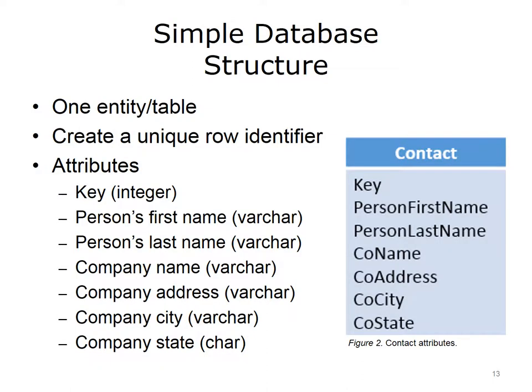Consider a database containing contacts' data. For each contact, the name and company information are recorded. A simple database structure can be created using a single entity that looks like the contact file. The data about a contact comprise the attributes of the contact entity. A key — an identification number — is then added to uniquely identify each row. The contact's name is not necessarily unique, so it cannot be used to identify each entry. For example, a user must be able to tell the difference between a Maria Perez who works at Community Hospital and a Maria Perez who works at Main Medical Center. The data types associated with each data element also need to be specified. For names and addresses, a character data type such as char or varchar should be used. The key is usually an integer value, since it is more efficient to do numeric comparisons than text comparisons.